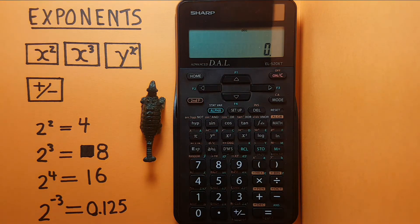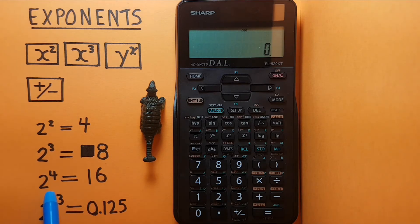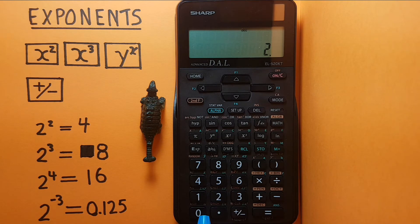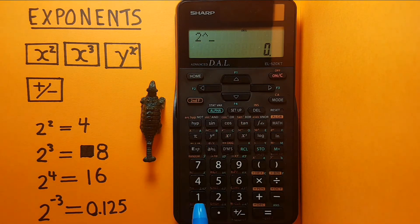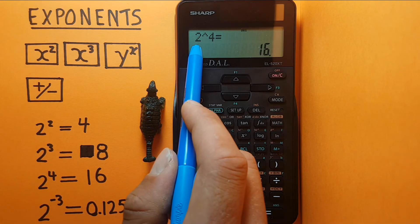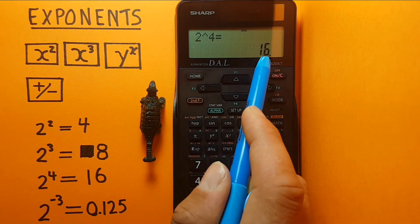And if we want to find an exponent that isn't a square or a cube, we enter it like this. So if we want to find 2 to the power of 4, we would enter 2, y to the x, and we see that little up arrow on the top screen, and then the exponent, so 4 equals. This gives us 2 to the power of 4 equals 16.